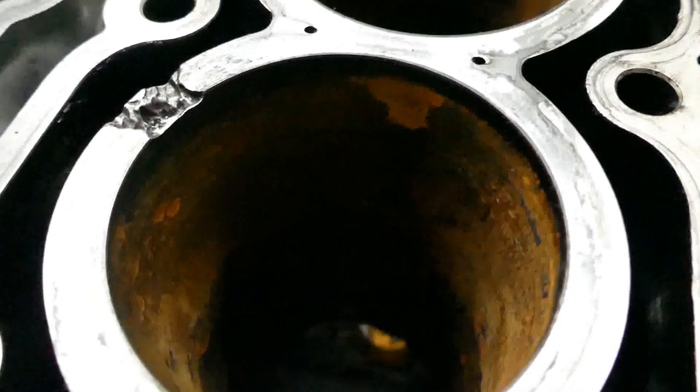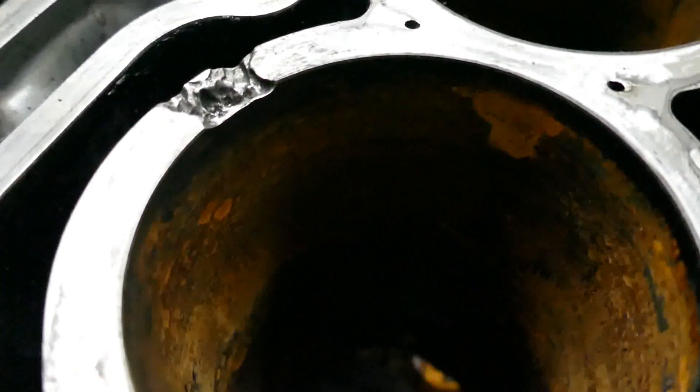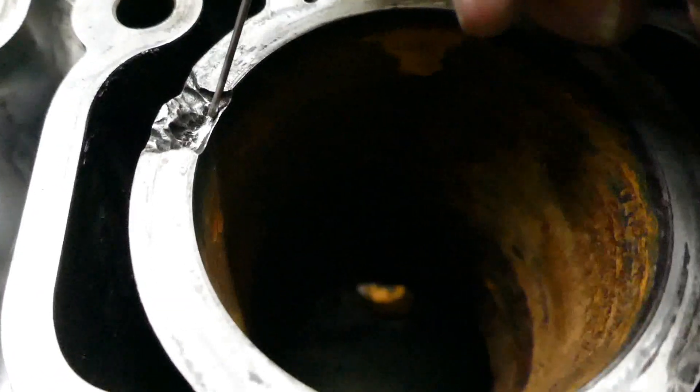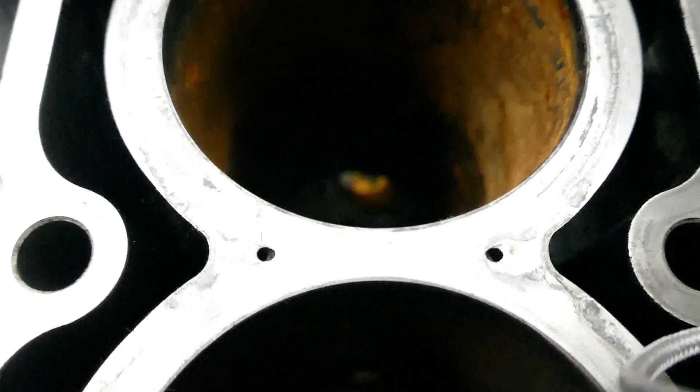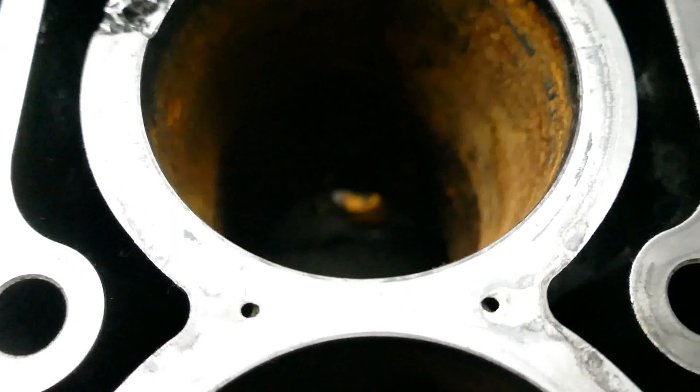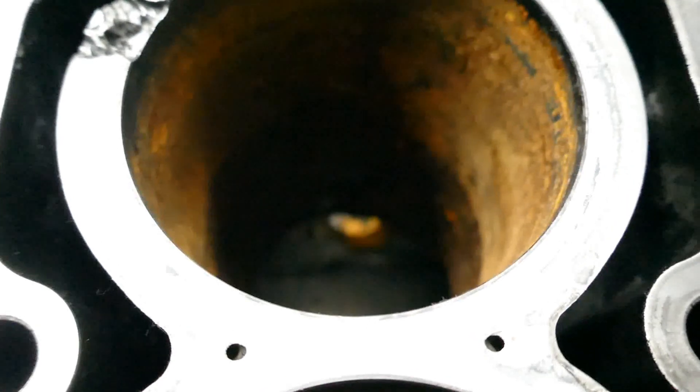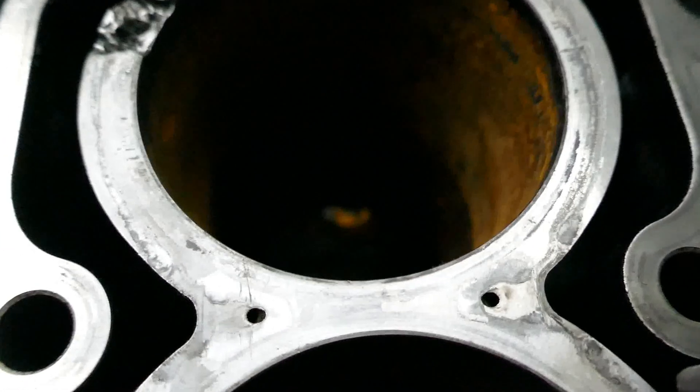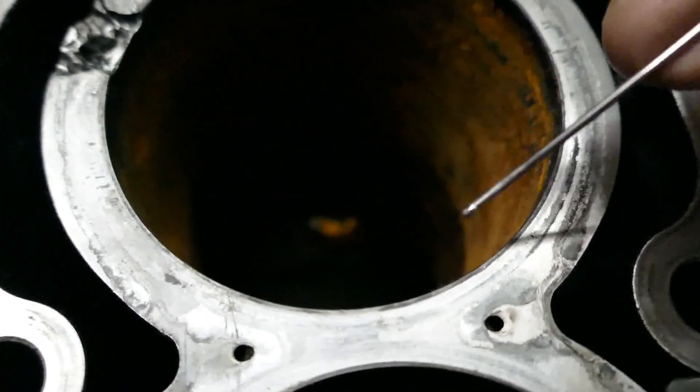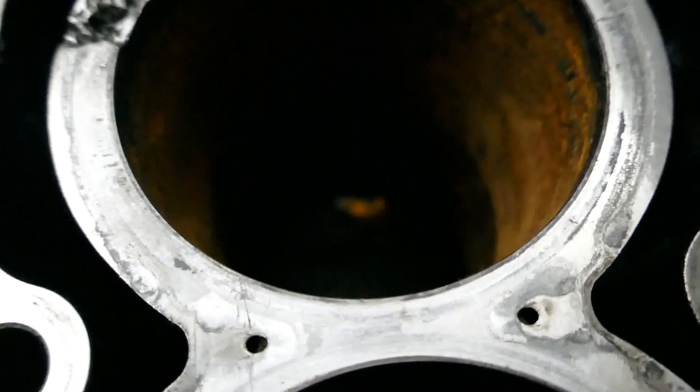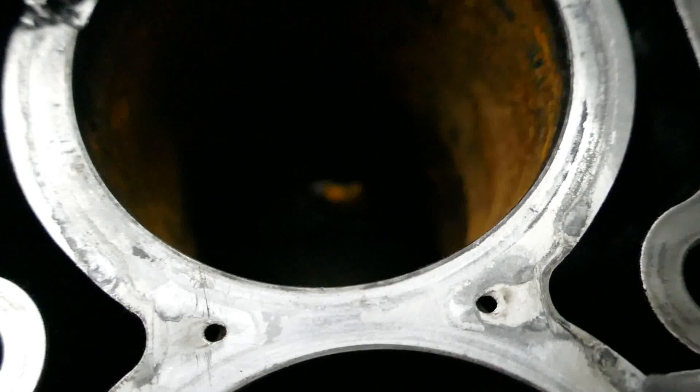So we're going to give this a go. It's an alloy block and it's got obviously steel liners because it's gone rusty in the bores, but they are so thin. That is ever so thin there. The whole thing is down a bit. That is ever so thin, looks like about a millimeter thick steel lining.